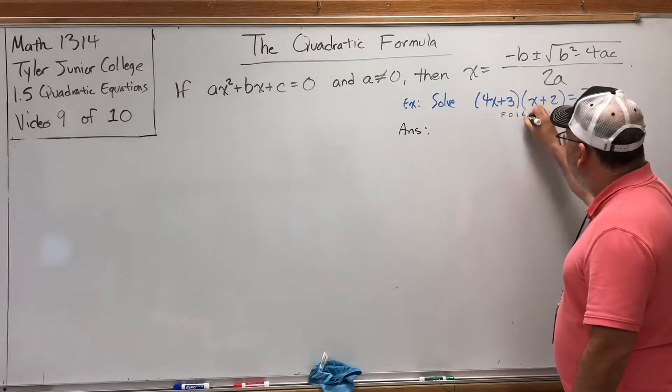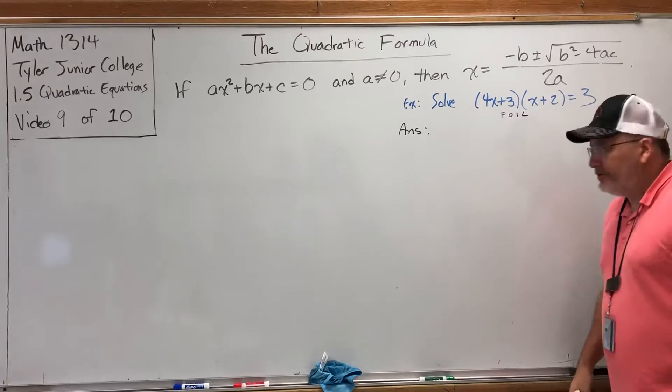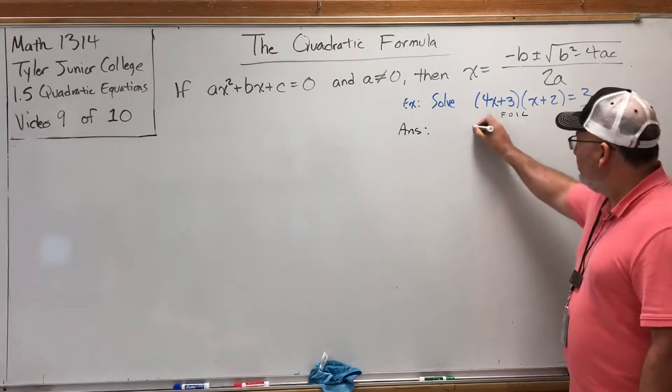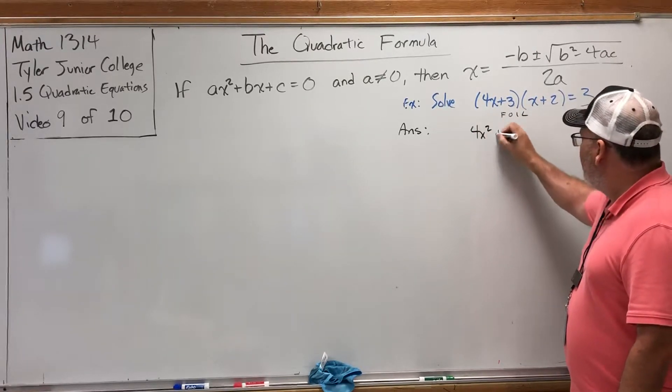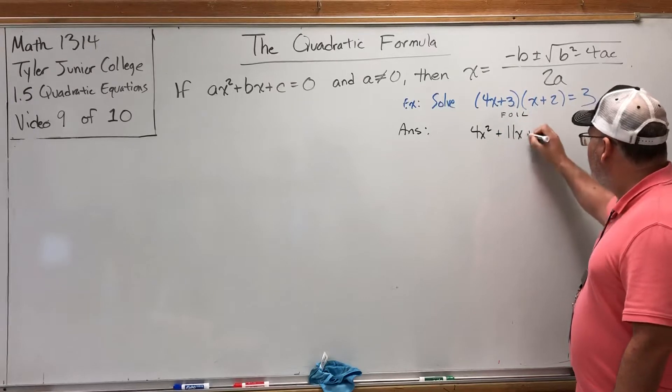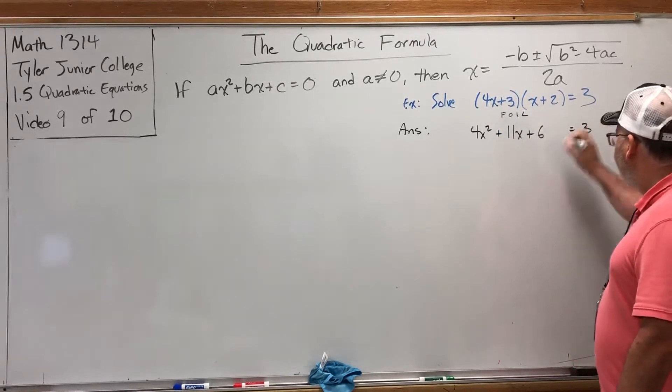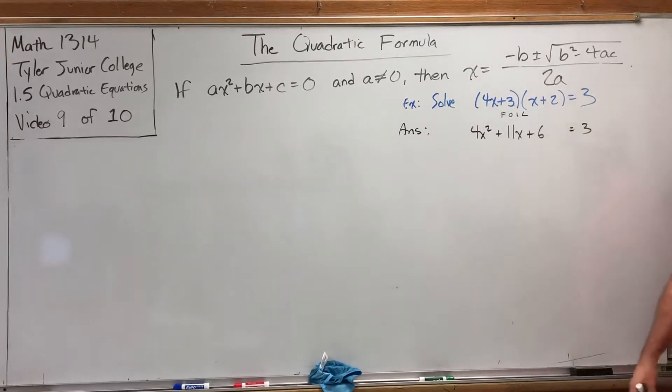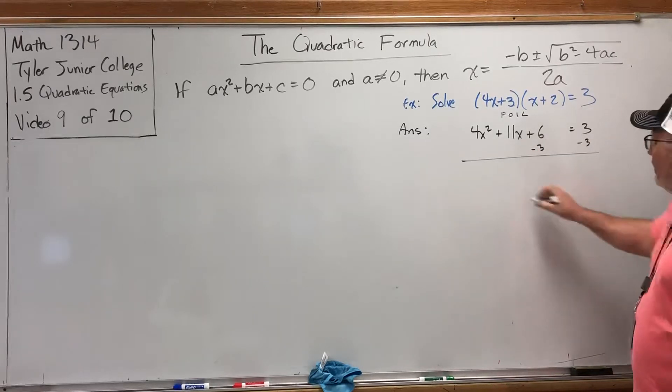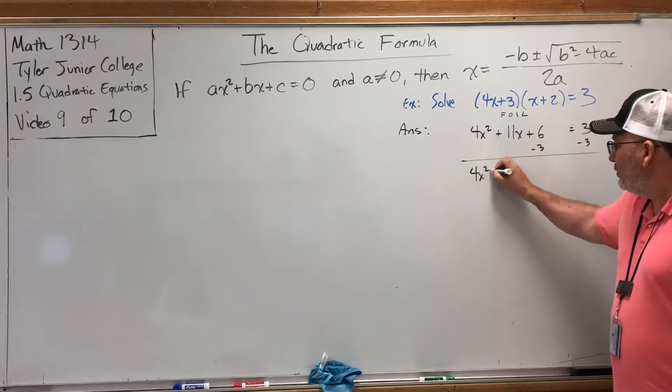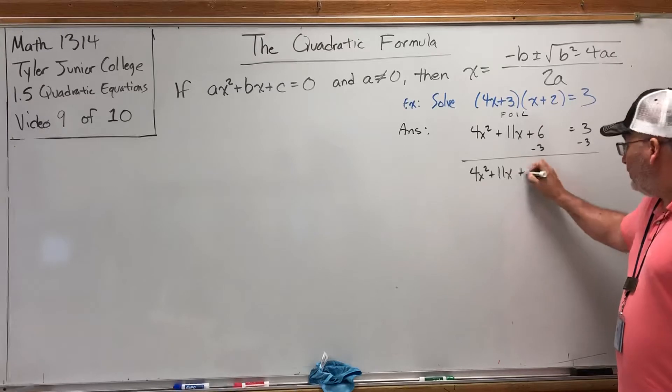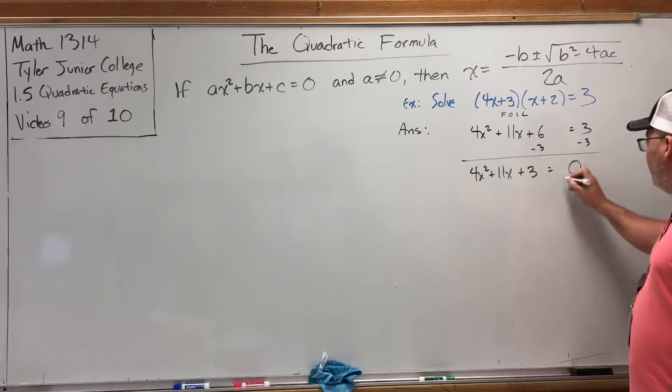I'll spare you the details. If you foil this, you should get 4x²+11x+6. That's equal to 3. But I need it equal to 0. So let's empty out the right side by subtracting 3 from both sides. And we get 4x²+11x+3=0.